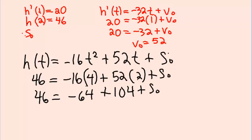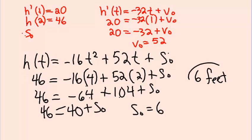Here we got a negative 64, a plus 104. When you combine them, you should get 40, which means s-naught must be 6. The label on that is in feet. So, this thing had a 6-foot head start when it was released from the person's hand.